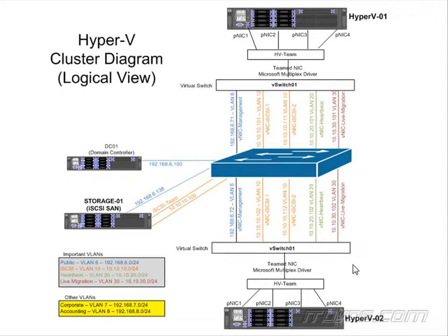We've already discussed the different types of traffic. We're going to create a public subnet, an iSCSI subnet, a heartbeat network for our cluster communications, and a live migration network — and these are going to be different VLANs running on different subnets. Our two nodes are going to be Hyper-V01 and Hyper-V02, and we're actually going to add a third node later on.